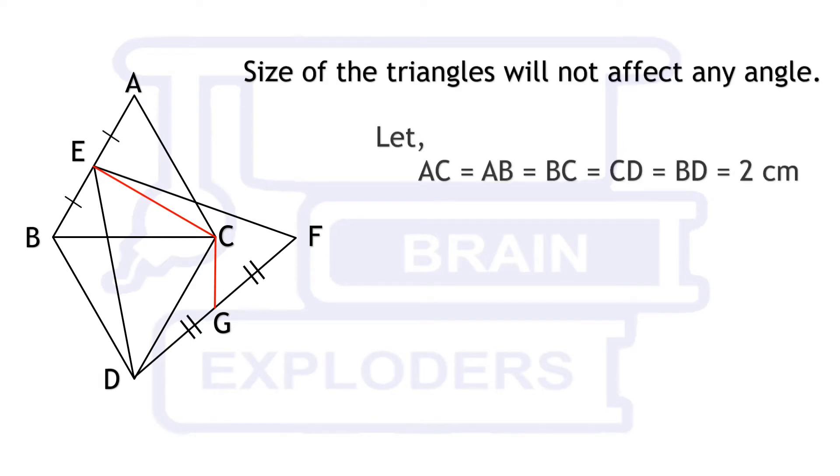Let the size of smaller triangles be equal to 2 cm. Angle CEA is a right angle and triangle CEA is a right angle triangle. EA is equal to 1 cm. On applying Pythagoras, we get EC equals to root 3 cm.